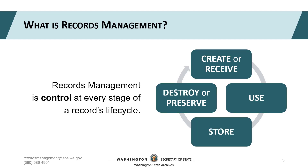Records management is all about control. It allows us to be compliant, efficient, and transparent at every stage of a record's lifecycle. The lifecycle begins when a record is created or received. This is the perfect time to make sure everyone understands their records management responsibilities, that there are documented policies and procedures in place to guide active management, and that all agency staff is trained to use those resources. Getting ahead at the first step of a records lifecycle guarantees straightforward retrieval, disclosure, and disposition down the line.